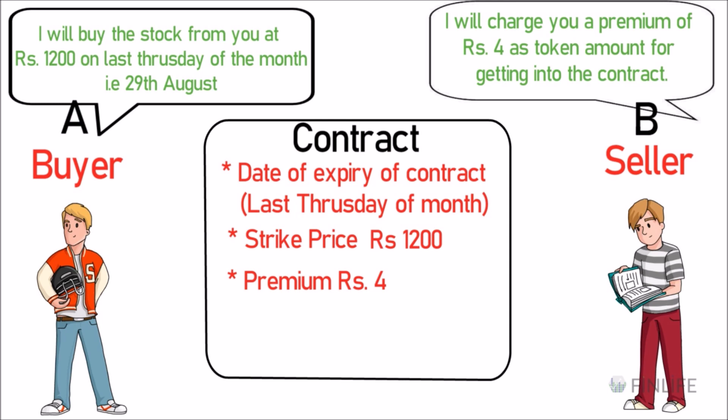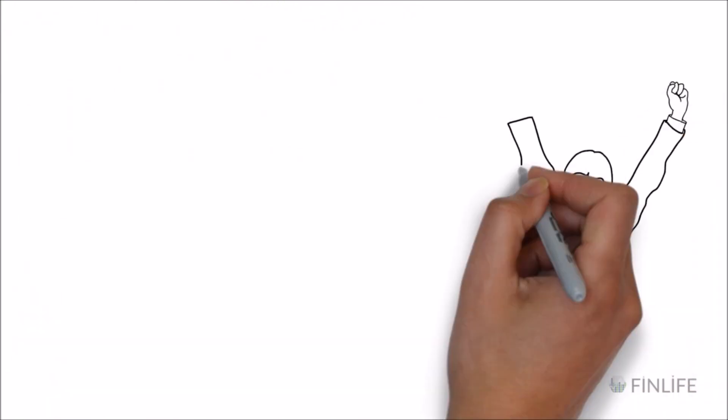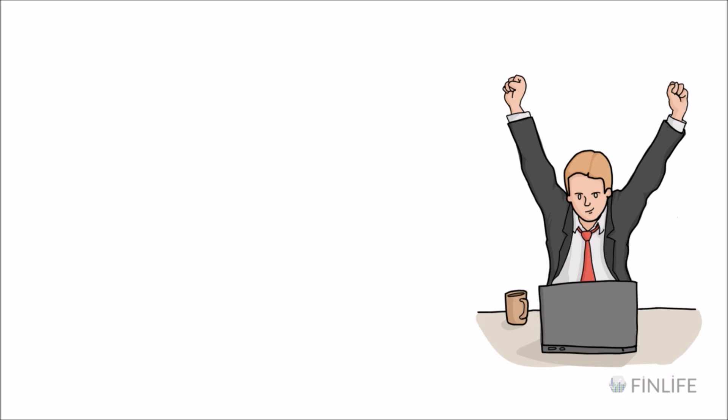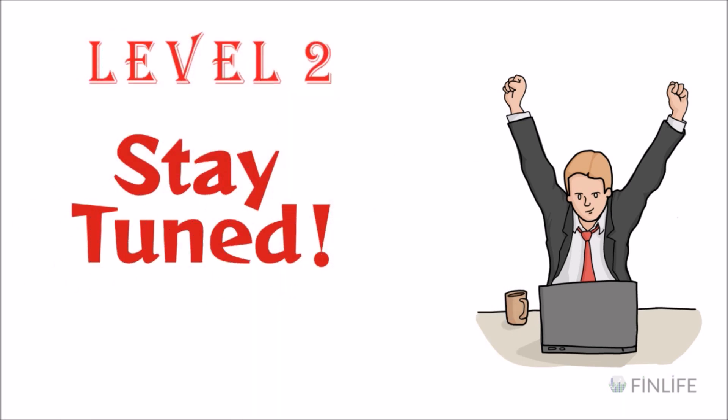The definition you'll find: the buyer of any option has the right but not the obligation to fulfill the contract, whereas the seller has the obligation to fulfill it whenever the buyer exercises. A is the buyer of the call contract — on expiry, A will buy shares from B and B must sell. That's what I wanted to explain in this video on calls. I'll see you in the next video.